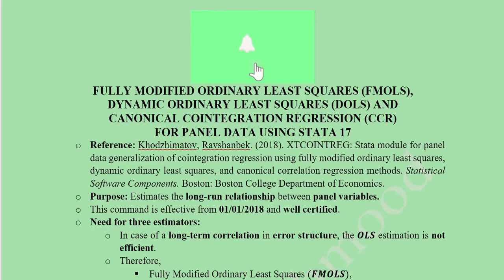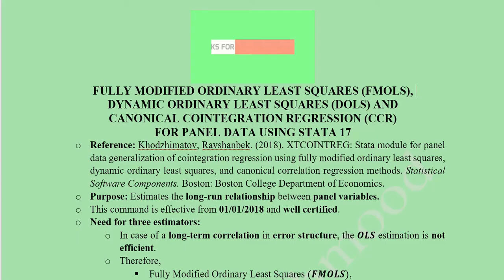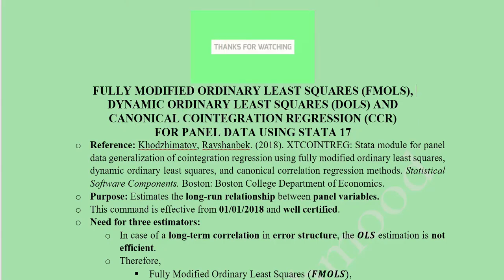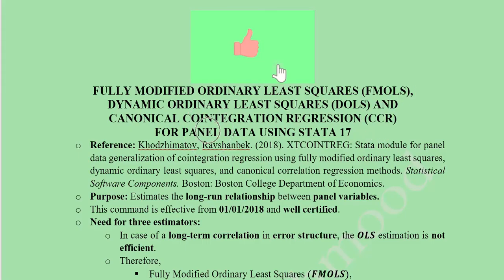In this video we will learn how we can use Stata 17 to find the Fully Modified Ordinary Least Squares (FMOLS), Dynamic Ordinary Least Squares (DOLS), and Canonical Cointegration Regression (CCR) in a panel data set.